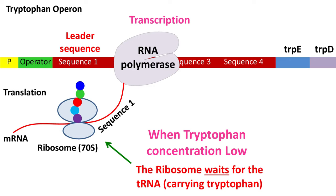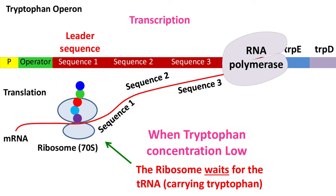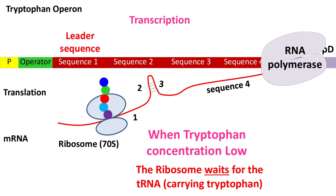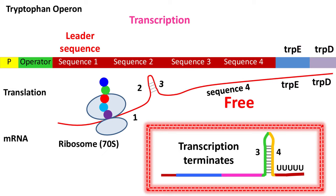However, because the tryptophan concentration in the cell is very low, the ribosome waits for the tRNA carrying tryptophan. The ribosome keeps waiting for the tRNA with tryptophan to come, and the RNA polymerase continues the transcription. As soon as the RNA polymerase transcribes sequence 3, sequence 2 and 3 form a loop structure. Because sequence 2 and sequence 3 have already paired, sequence 4 remains free. It's the pairing between sequence 3 and 4 that terminates transcription, but in this case the pairing is between sequence 2 and 3. As a result, the RNA polymerase continues the transcription of all the other genes of the operon.